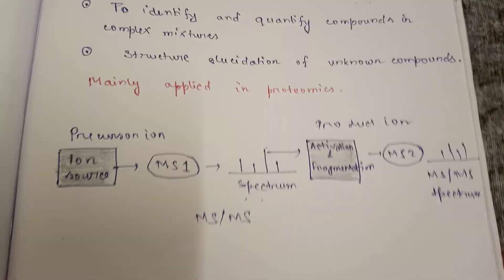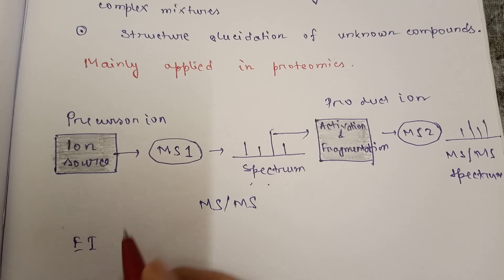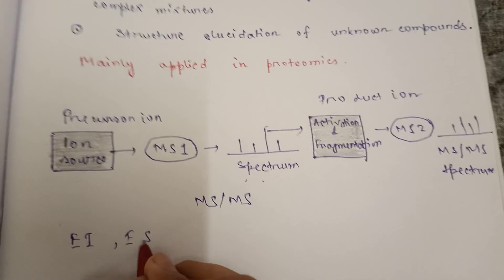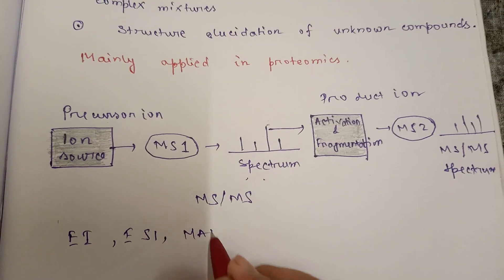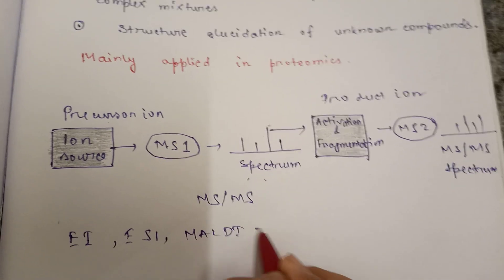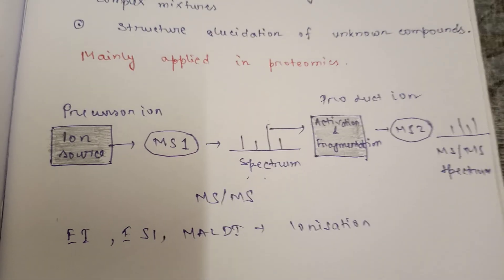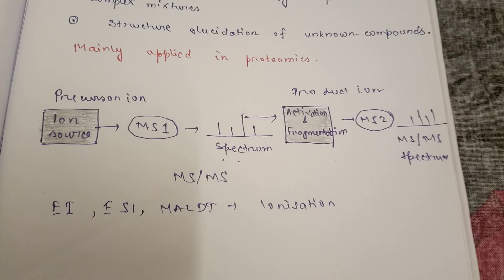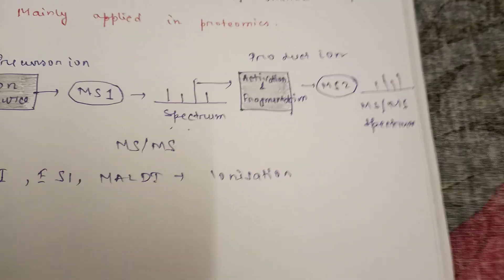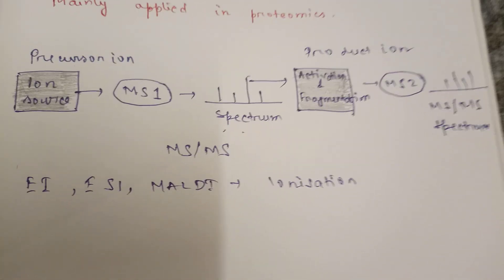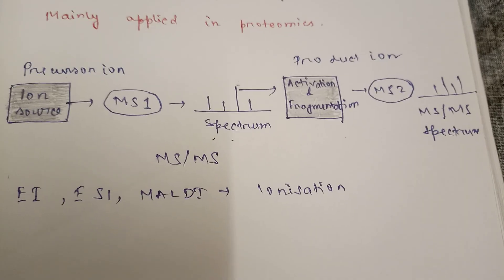For the ionization, normally electron bombardment, electrospray ionization (ESI), or MALDI are used. If you don't know about these, you can check the ionization part video of this mass spectrometry playlist in the description box or I button, where you will find the full playlist of mass spectrometry.